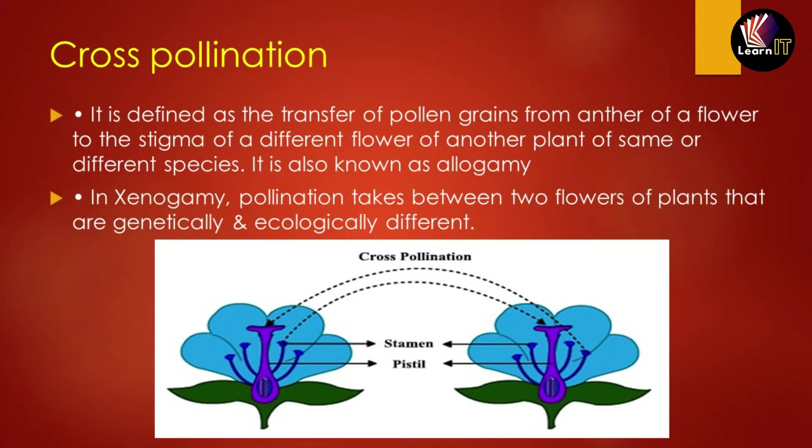In xenogamy, pollination takes place between two flowers of plants that are genetically and ecologically different. This type of pollination is specifically known as xenogamy.